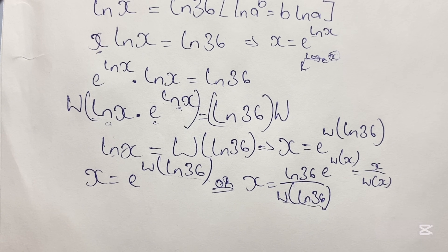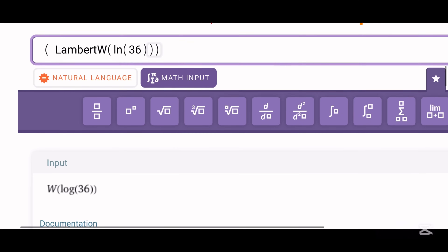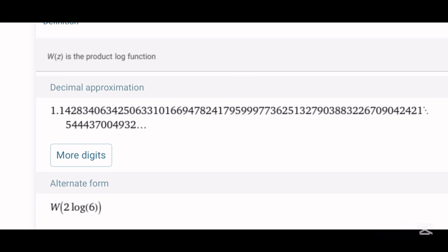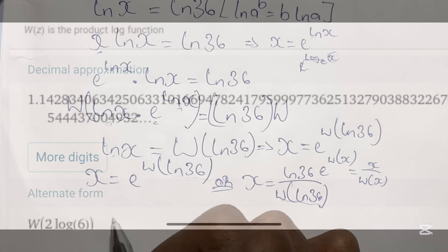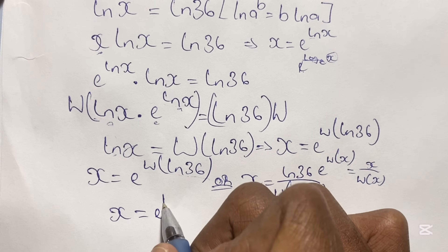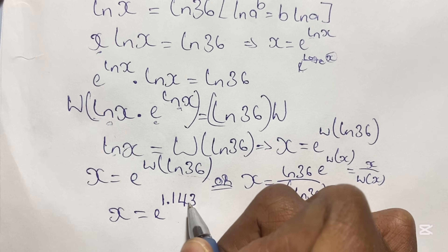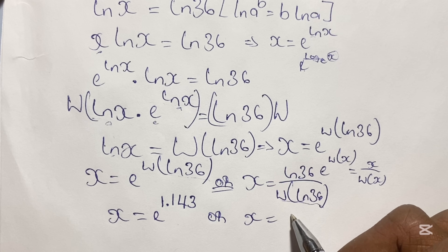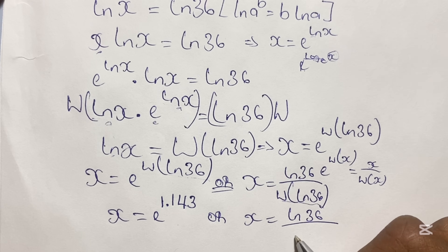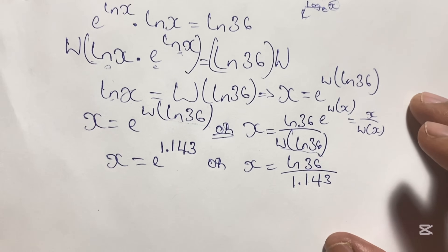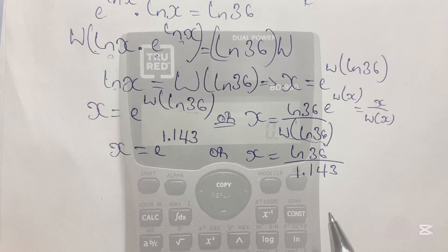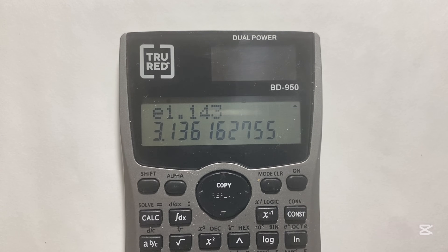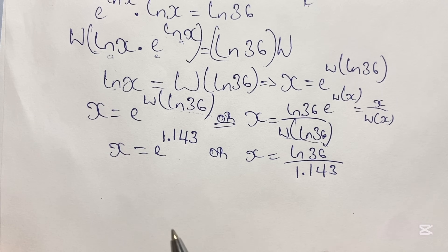We start to solve by finding the value of W(ln 36), using Wolfram Alpha as our calculating tool. Plugging in our values and scrolling down to see the result, we can see that W(ln 36) is approximately 1.143. So x equals e to the power of 1.143, and also x equals ln 36 over 1.143. Using our scientific calculator, x is approximately 3.1362.